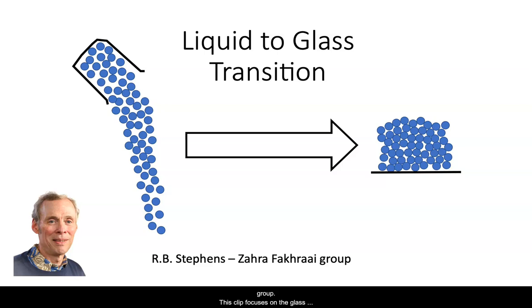Hi, I'm Rich Stevens, a member of the Fakhry group. This clip focuses on the glass transition, the changing of a liquid to a disordered solid. I've sketched the structures above. There's the hot liquid on the left, cooler glass on the right.